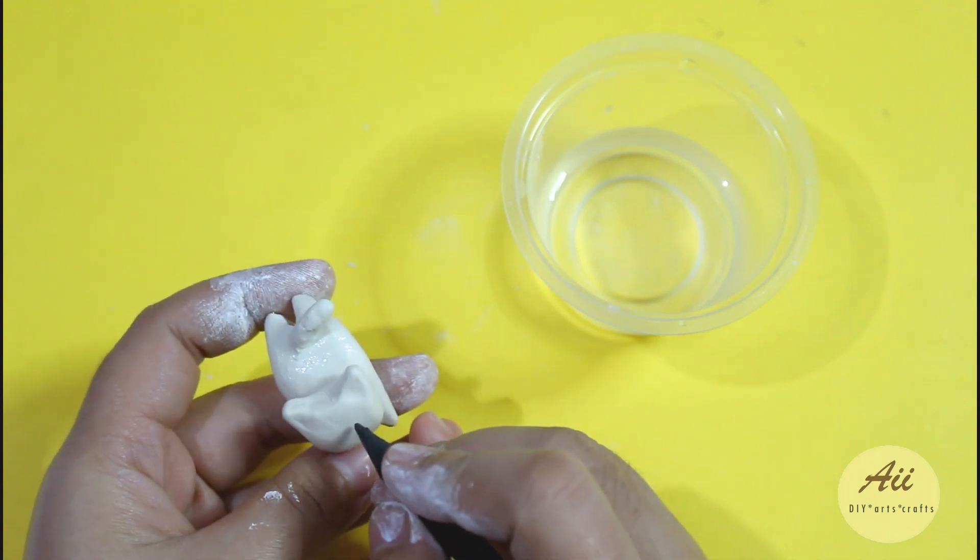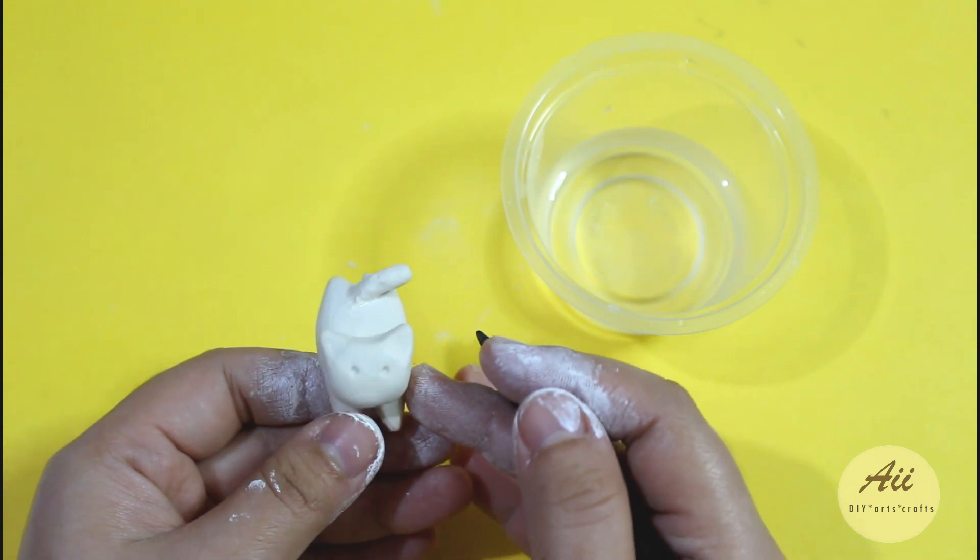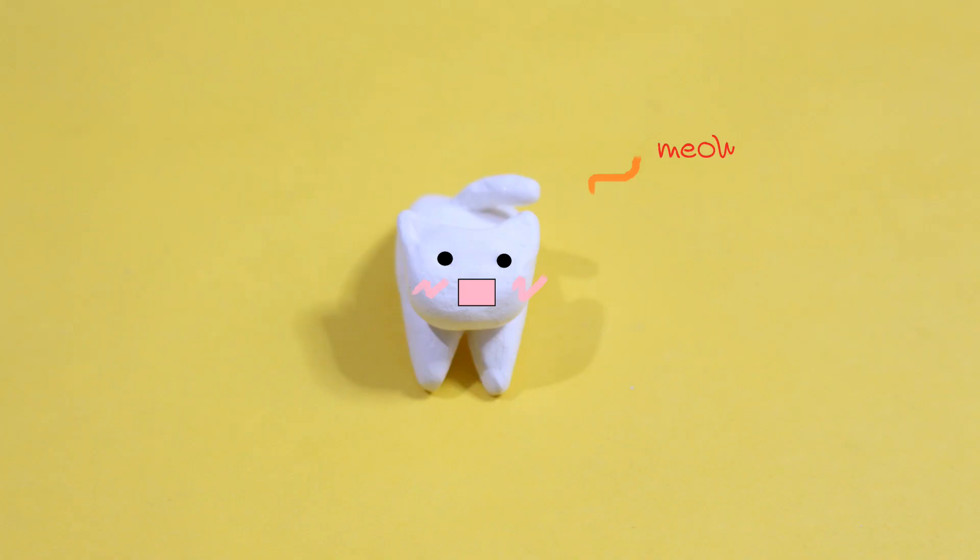Using a pencil or a dotting tool, poke two small dots to create the eyes. Since we can't get enough cats, we are making our second kawaii cat.